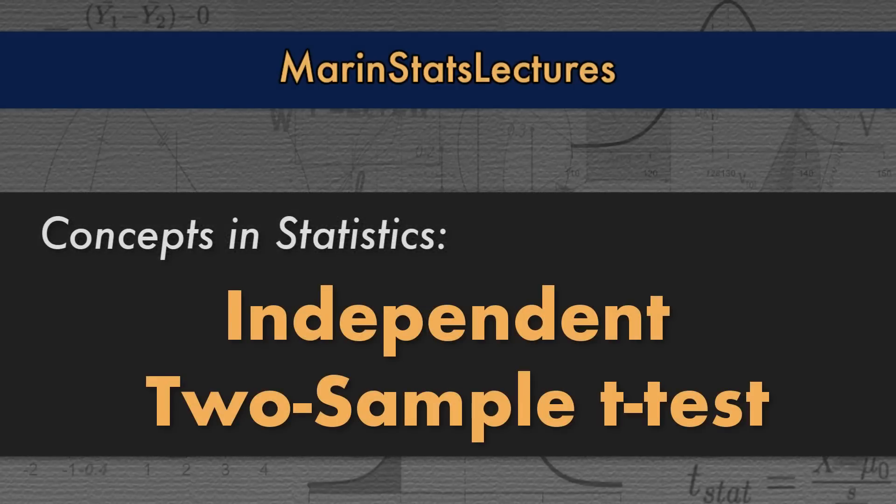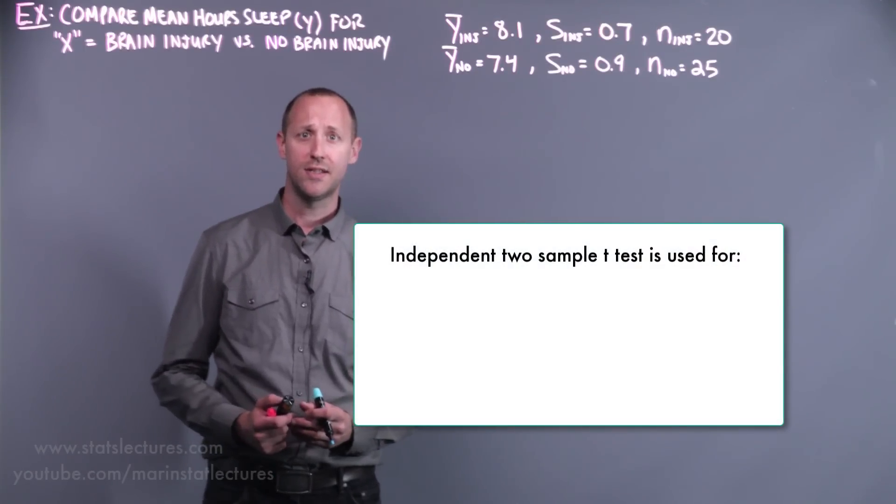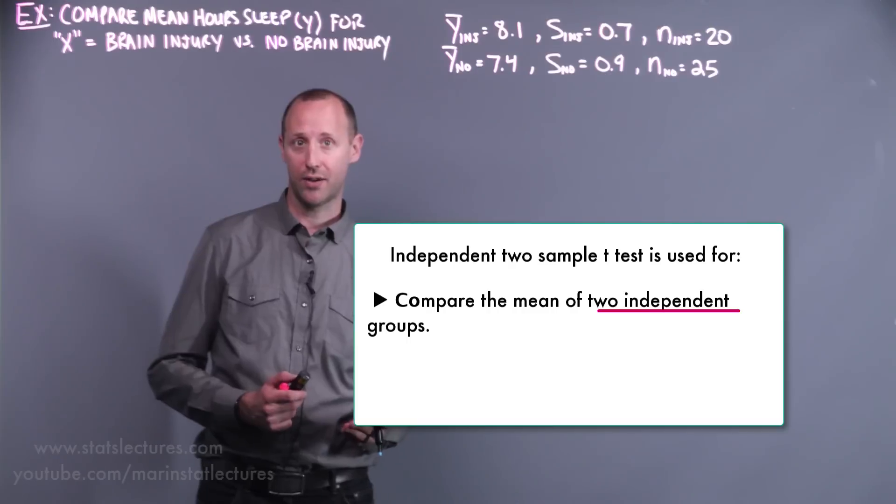We're going to introduce the independent two-sample t-test. The independent two-sample t-test is useful for comparing the mean of two independent groups.